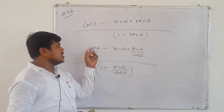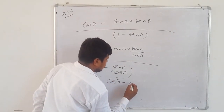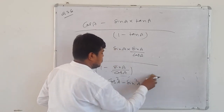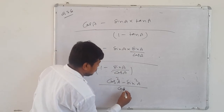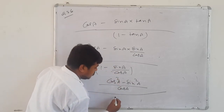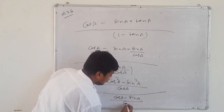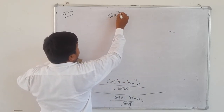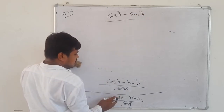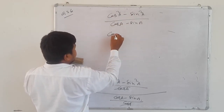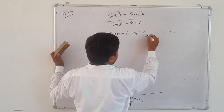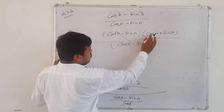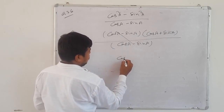After LCM: numerator is cos²A - sin²A, denominator is cos A·(cos A - sin A)/cos A. Using a² - b² = (a - b)(a + b): cos²A - sin²A = (cos A - sin A)(cos A + sin A). Over denominator (cos A - sin A): (cos A - sin A) cancels. Remaining: cos A + sin A.